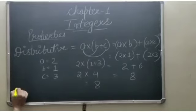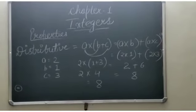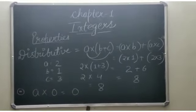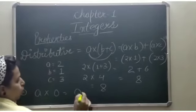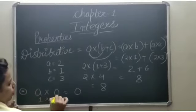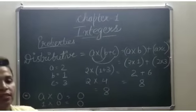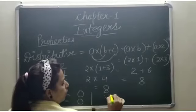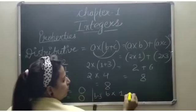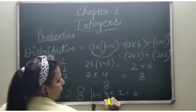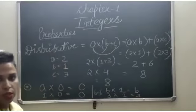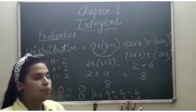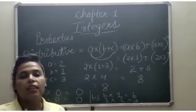One more thing: if anything is multiplied by 0 — suppose A multiplied by 0 — you will get 0. If any number is multiplied by 0, the answer would be 0. For example, 1 multiplied by 0 is equal to 0. On the other hand, if anything is multiplied by 1 — suppose B is 3 — anything multiplied by 1 gives that number itself, which is 3. So anything multiplied by 0 gives 0, and anything multiplied by 1 gives that number only.